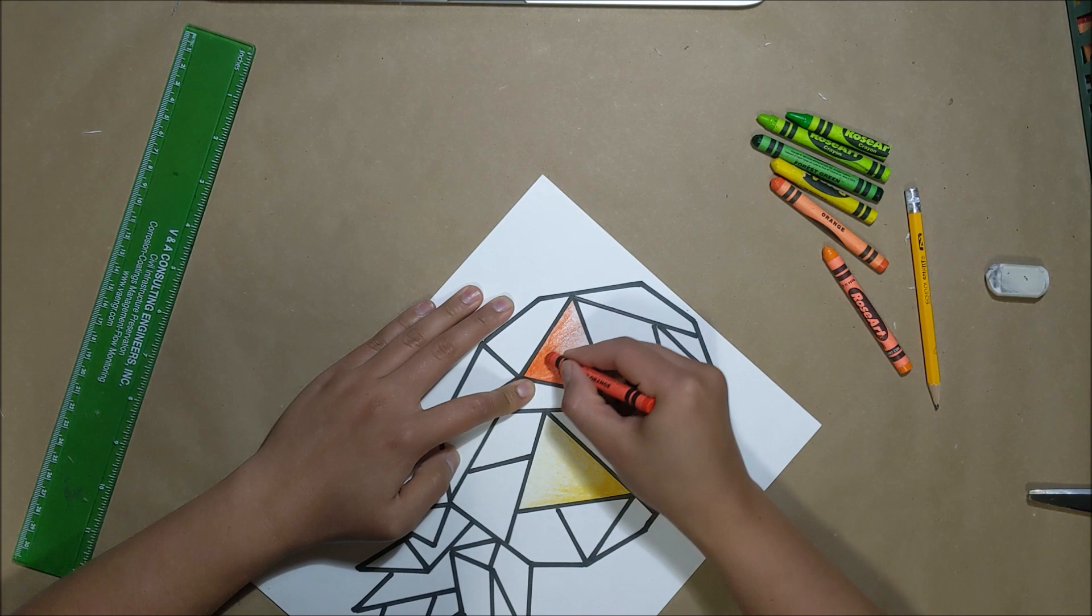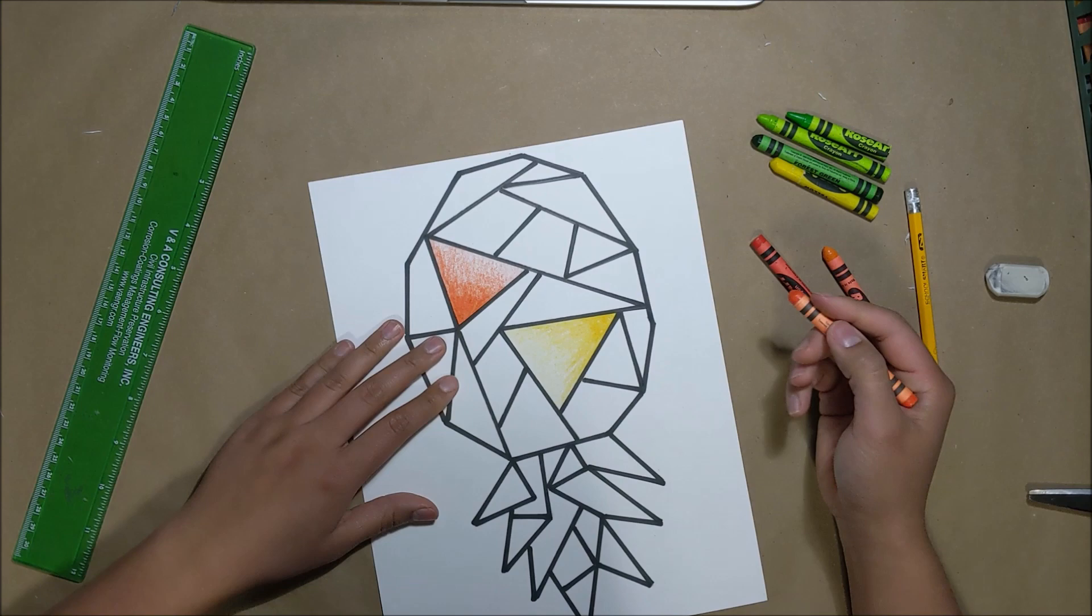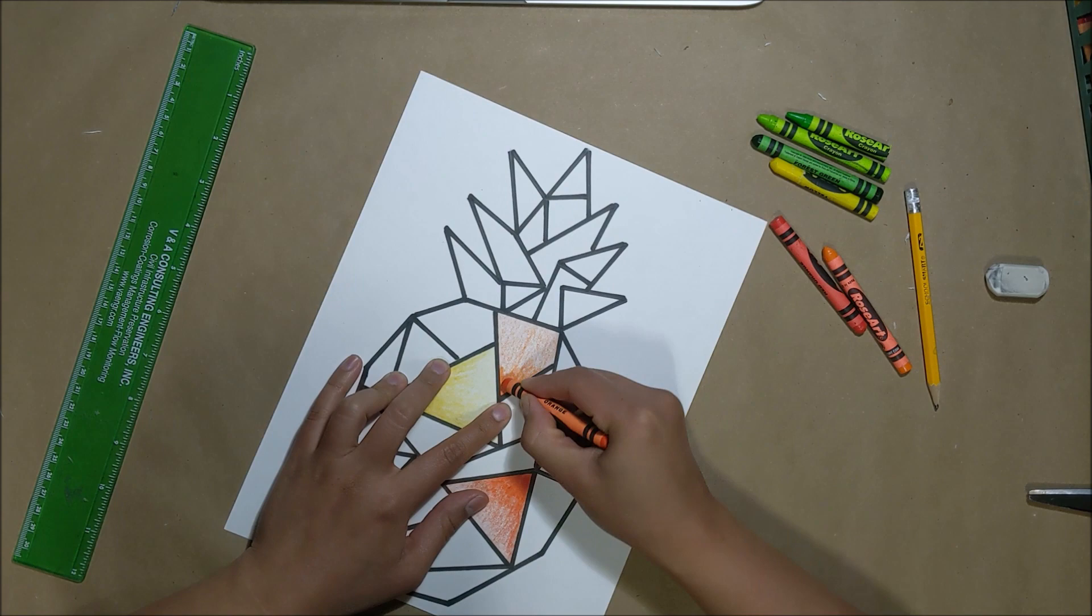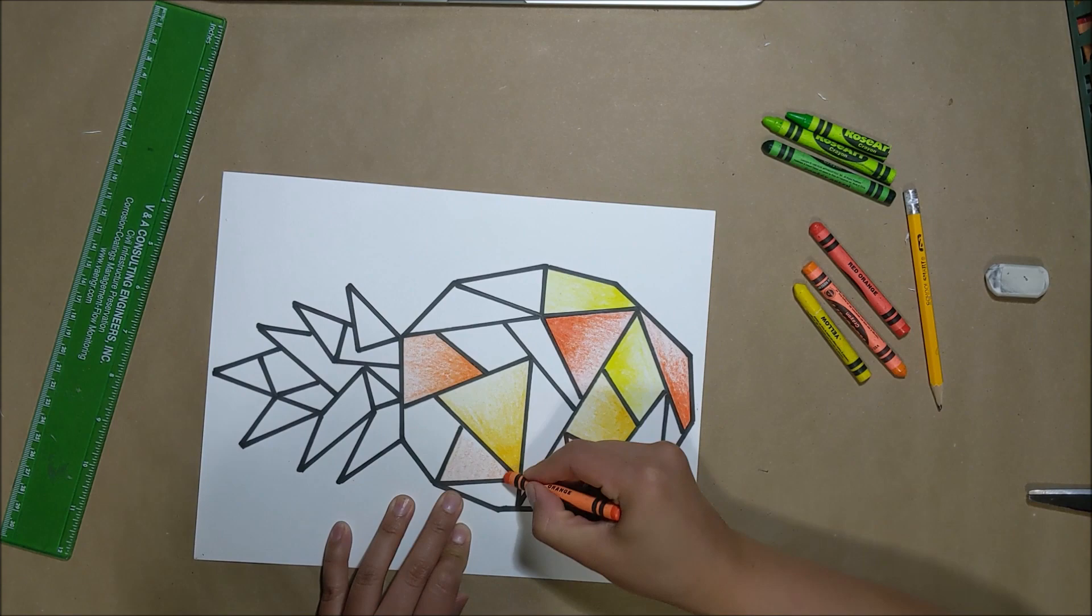Now, you want to continue this for all the shapes inside of your object. Getting the gradient going from darkest to lightest will take some practice and I hope at the end of this project, you'll have an easier time doing so.